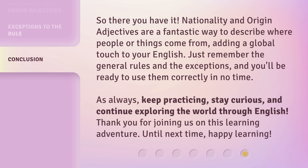So there you have it. Nationality and origin adjectives are a fantastic way to describe where people or things come from, adding a global touch to your English. Just remember the general rules and the exceptions, and you'll be ready to use them correctly in no time. As always, keep practicing, stay curious, and continue exploring the world through English. Thank you for joining us on this learning adventure. Until next time, happy learning!